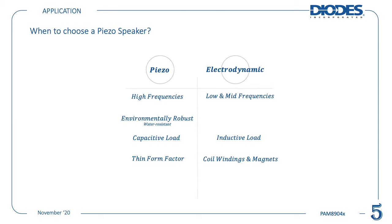So why would we even choose a piezo sound driver? For alarm signals, high frequencies are most desirable. They can be environmentally more robust. Piezo speakers are a capacitive load, not an inductive one, and they can have an extremely thin form factor. An electrodynamic speaker can cover a large range of frequencies, but this is not necessarily interesting for warning signals. Additionally, they have coil windings and magnets, which adds additional design difficulty. Overall, our piezo driver follows the same design philosophy: small, efficient, and gets the job done.